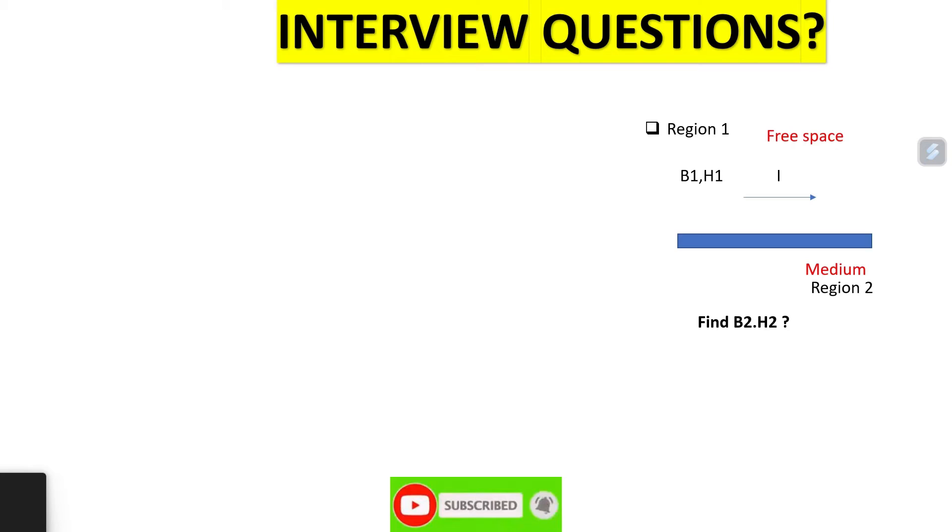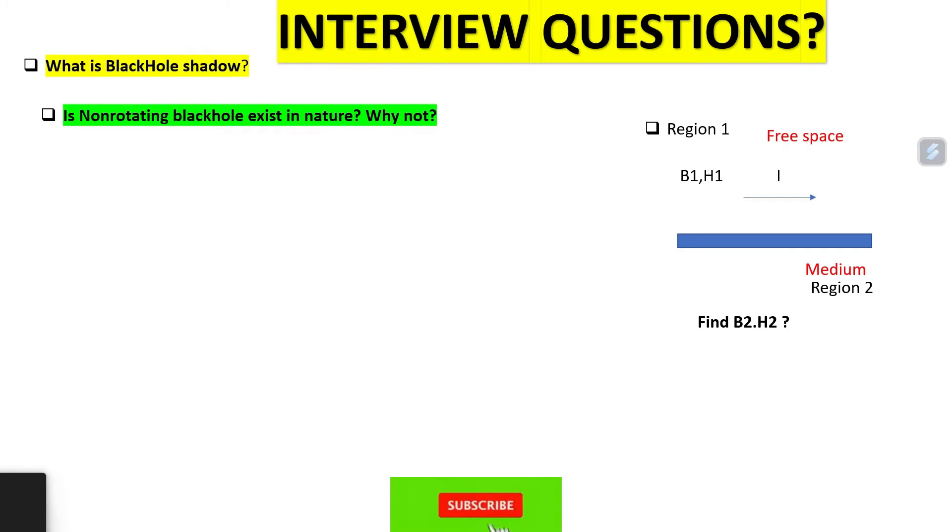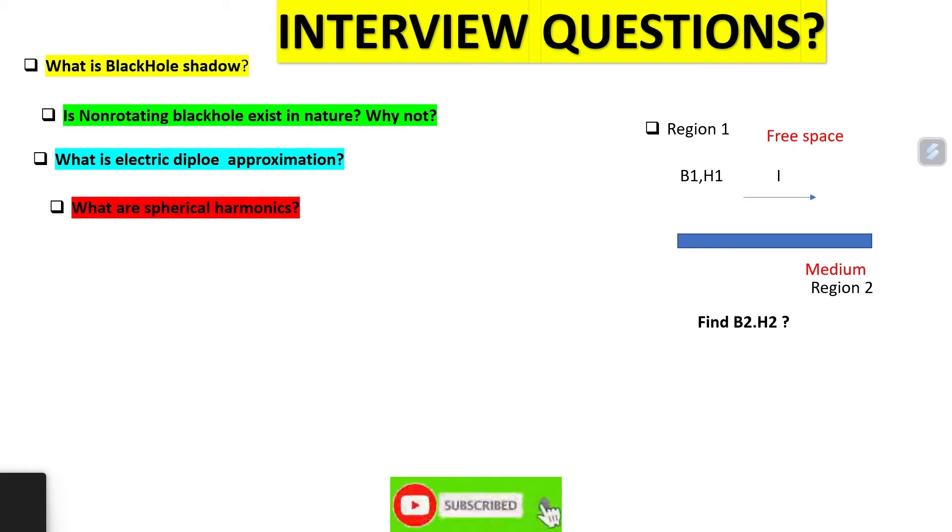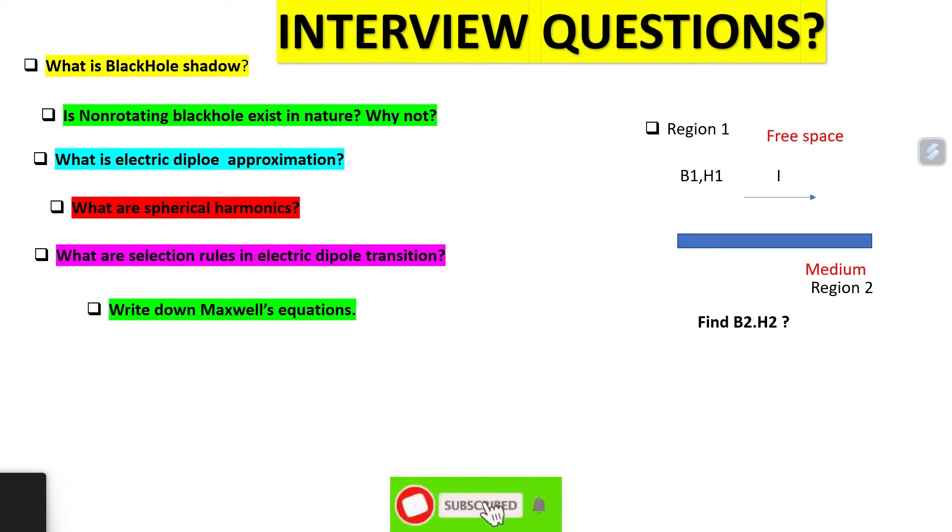The questions were as follows: First question was from EM theory. In the following figure, find D and H field in region 2 if in region 1 there is I amount current carrying conductor. What is black hole shadow? Is non-rotating black hole exist in nature? Why not? What is electric dipole approximation?